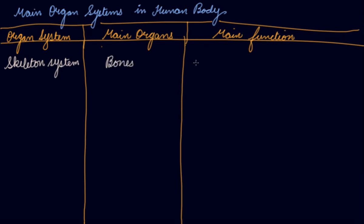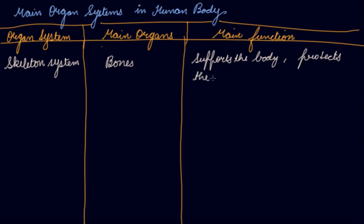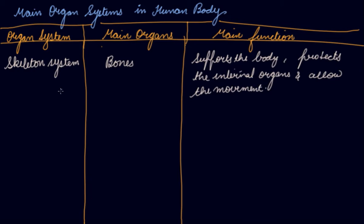The skeletal system supports the body, protects the internal organs, and allows movement. It is because of the skeleton that you are able to move, due to the flexibility in the bones.